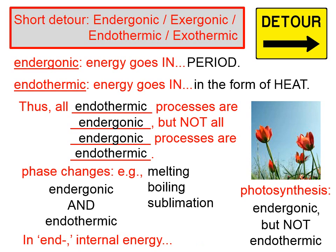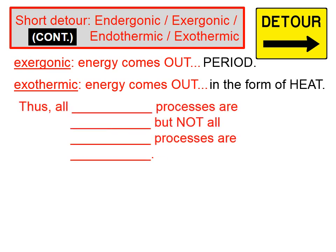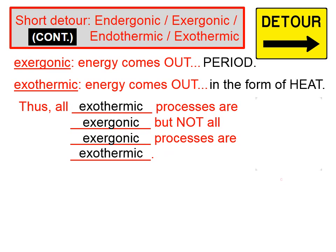To finish up: in endergonic processes, the internal energy will increase because you're putting energy in. We can use the same argument for exergonic and exothermic. In an exergonic process, energy comes out, period. In an exothermic process, energy comes out in the form of heat. Thus, all exothermic processes are exergonic, but not all exergonic processes are exothermic.